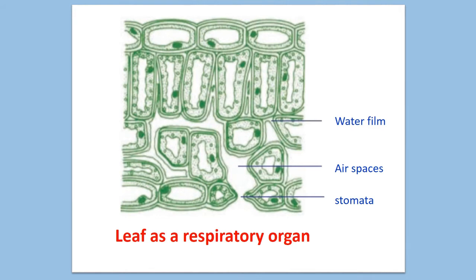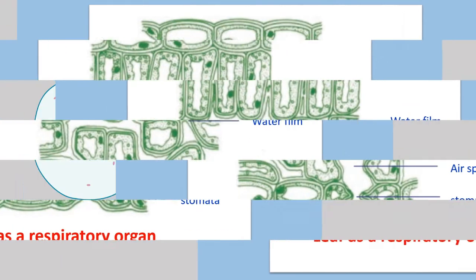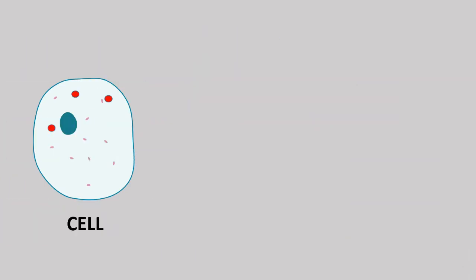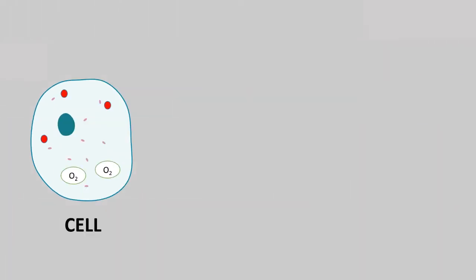These air spaces are lined with water where the oxygen is dissolved. Dissolved oxygen passes through the cell wall into the cytoplasm by the diffusion process. After reaching the cytoplasm, oxygen helps in sugar breakdown.